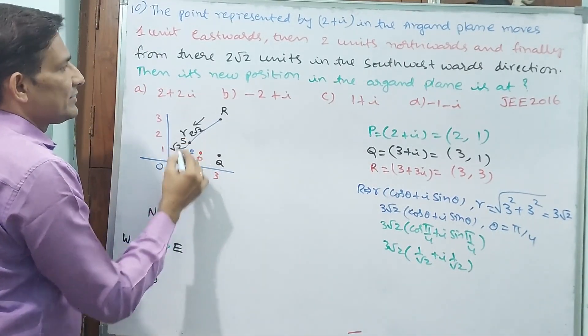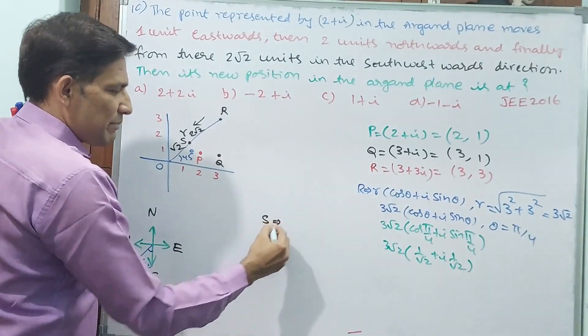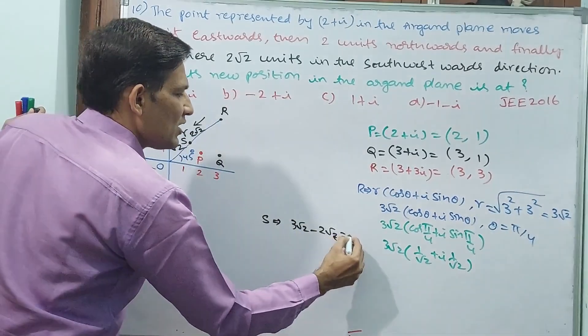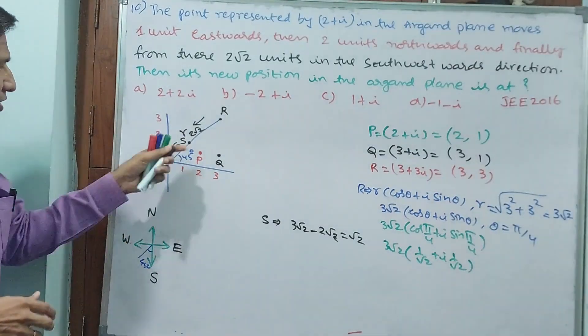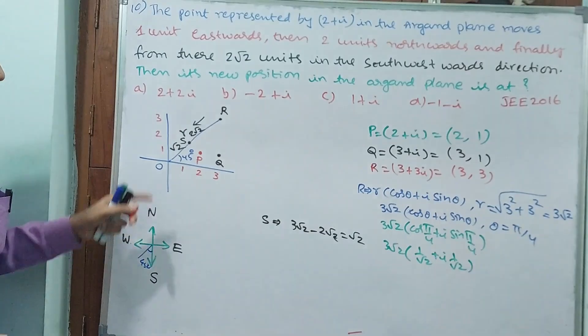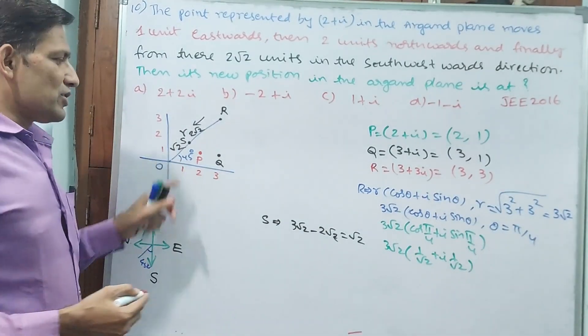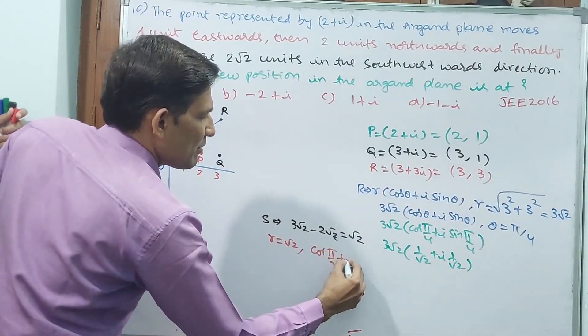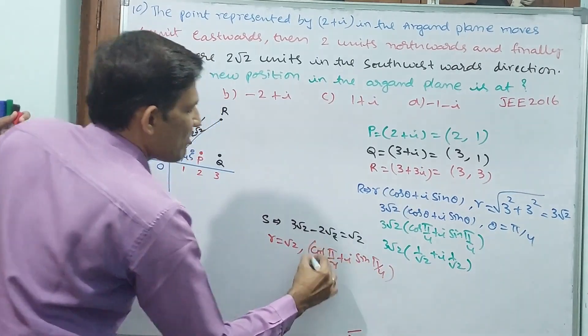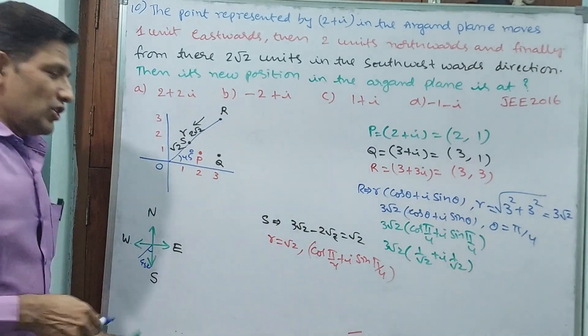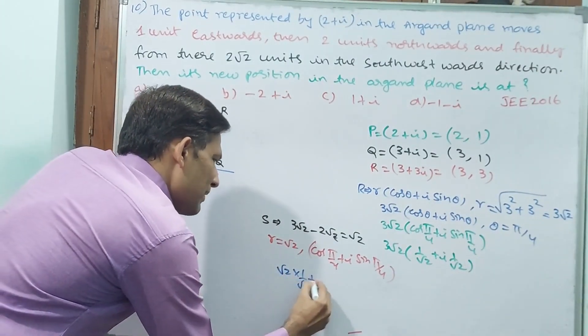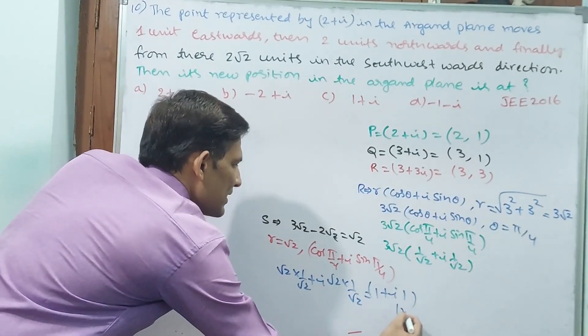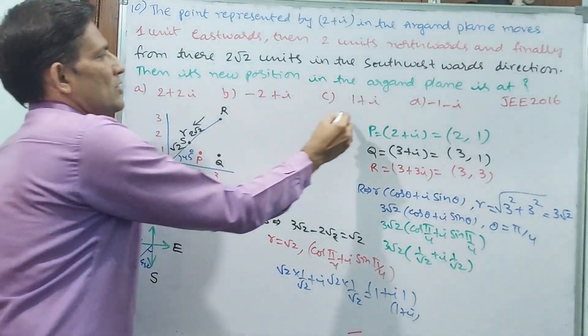Why? Because now I am taking this as S. S position implies 3 root 2 already is there minus 2 root 2. Why? Because same direction there is more. That means 1 root 2 will be there. From origin this will be root 2. But what about angle? This distance you know r, root 2. Then angle is same, cos pi by 4 plus i sine pi by 4. Why? Because same direction. Then you set root 2 inside. Root 2 into 1 by root 2 plus i, root 2 into 1 by root 2. That is equal to 1 plus i1. S is 1 plus i. This will be your answer.